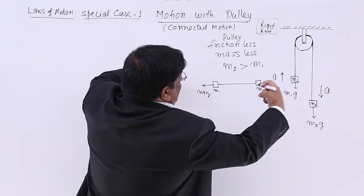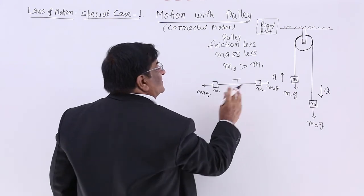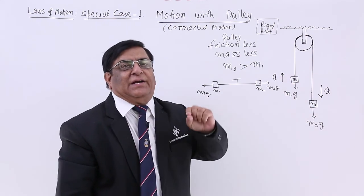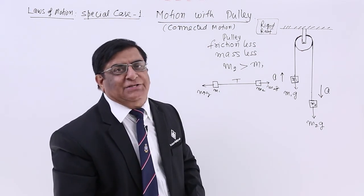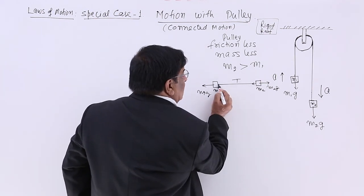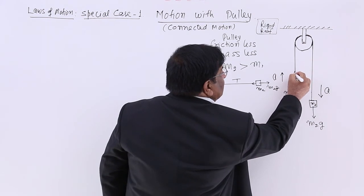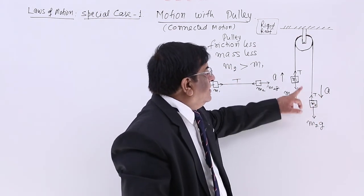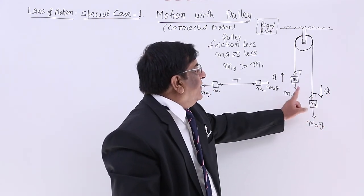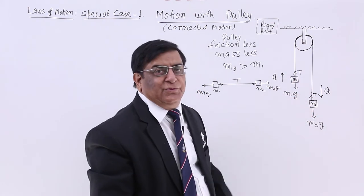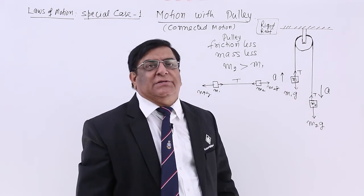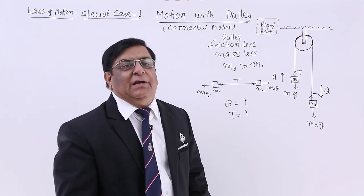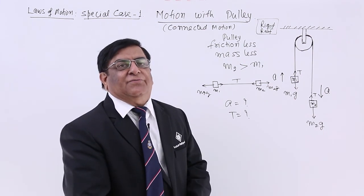So there are two forces acting and because of that there will be tension in the string. We assume there will always be tension in such strings. As we have studied, the tension at every point is always the same and the direction of tension is always inward. So here the tension T acts upward on each mass. We have to find the acceleration in terms of M1, M2, and G, and the tension T. For that we use the free body diagram method.